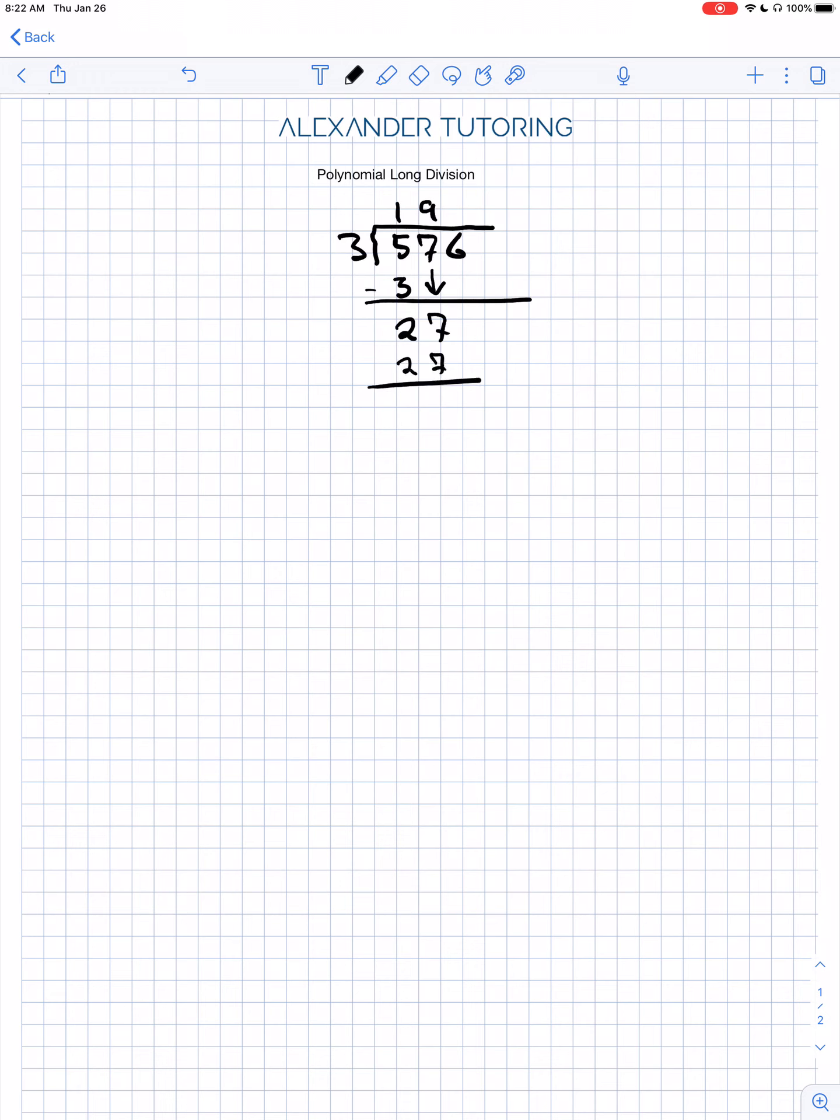Put that here. Subtract. It's 0. That's nice. Bring down the 6. 3 goes into 6 evenly. 2 times. 192 is the answer.